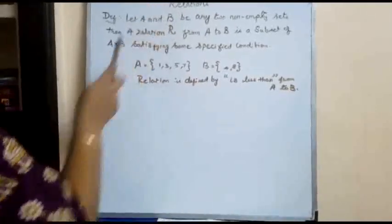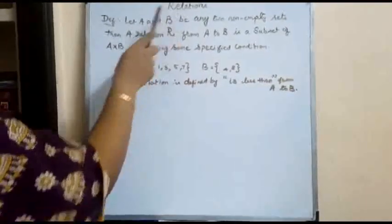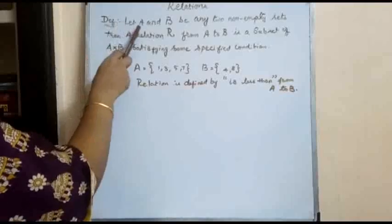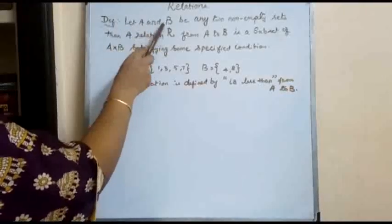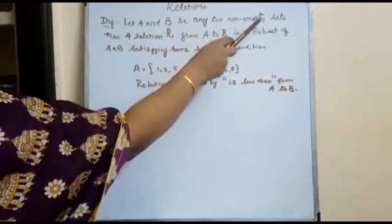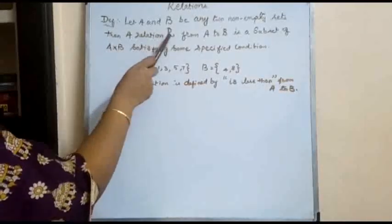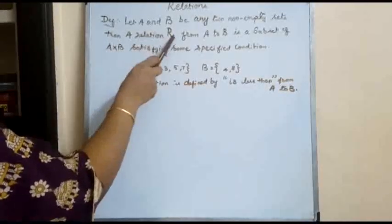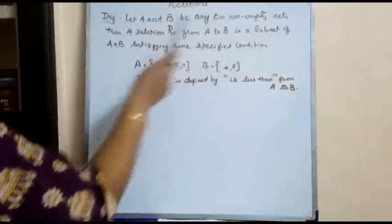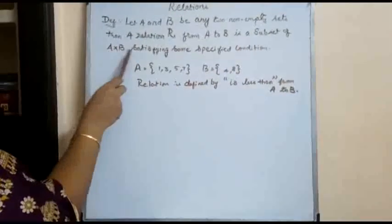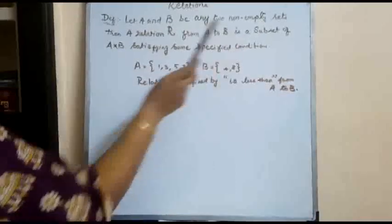Here today we are going to discuss about a concept: relations. The definition for relations is: let A and B be any two non-empty sets. A relation R from A to B is a subset of A cross B satisfying some specified conditions.